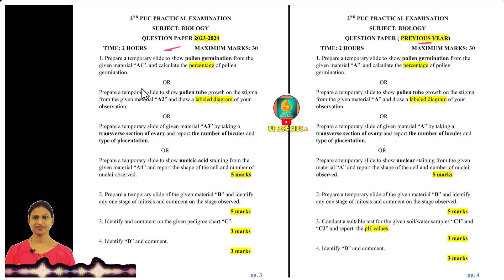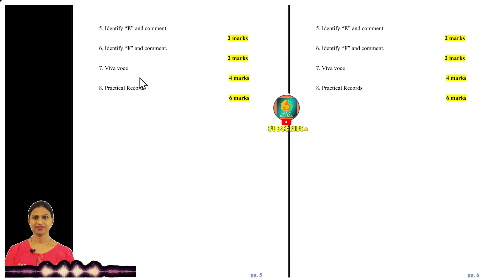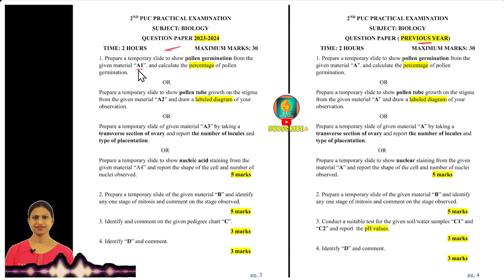Question number 1, there are four experiments A, B, C, D, E, F, what total? Six experiments are there. Question number 1 has four experiments. One is pollen germination, one is pollen growth on stigma, third is TS of ovary, and one is nuclear stain. These are four major experiments in question number 1.